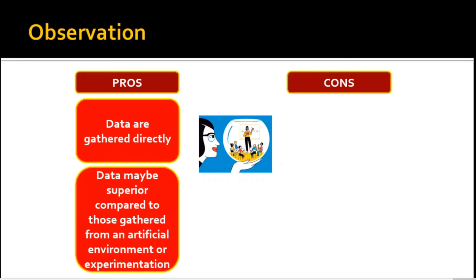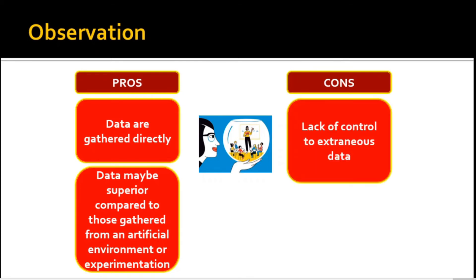In the contrary, observation's main disadvantage is lack of control of the observer when data are affected by extraneous variables or those variables that are not included in the study but are affecting the subjects in some way.